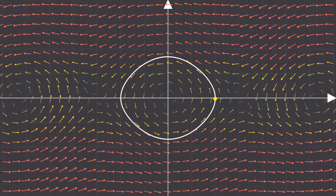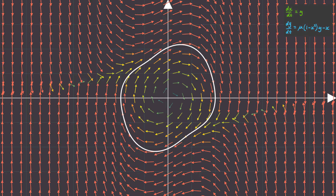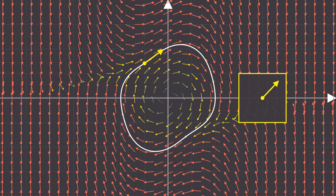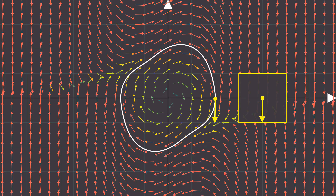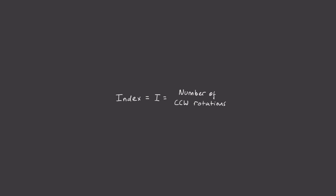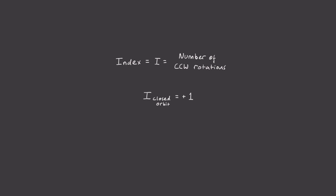Now let's consider the famous van der Pol equation and its periodic orbit once again. If we sweep this yellow dot around the curve, keeping the arrow in the direction of the vector field, we also notice that the arrow does one counterclockwise rotation. It turns out this isn't a property specific to these closed orbits — this is a property of all closed orbits. And if we define the index i as the number of complete counterclockwise rotations that have been made, then we can say that the index of all closed orbits is equal to plus one.